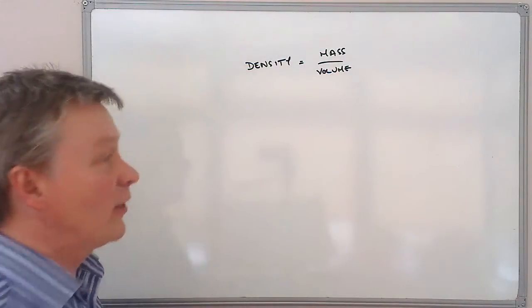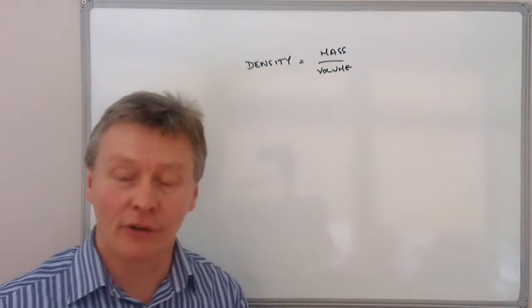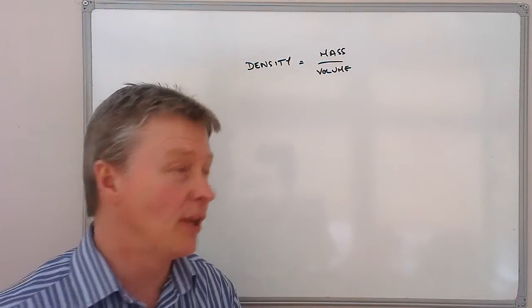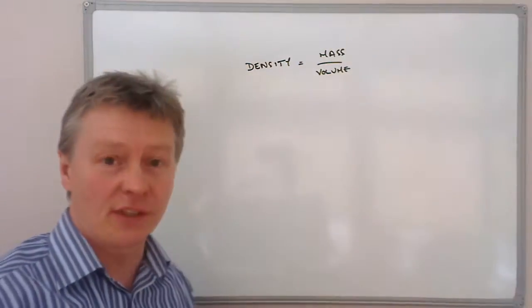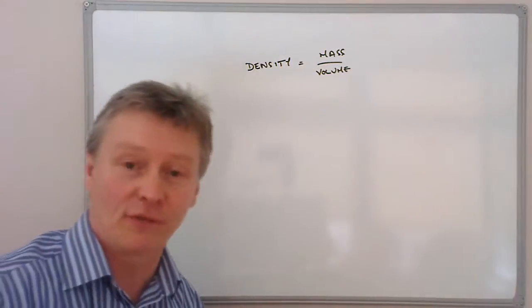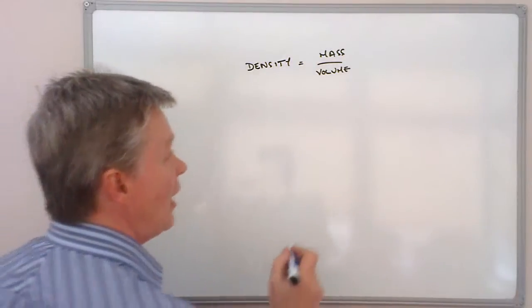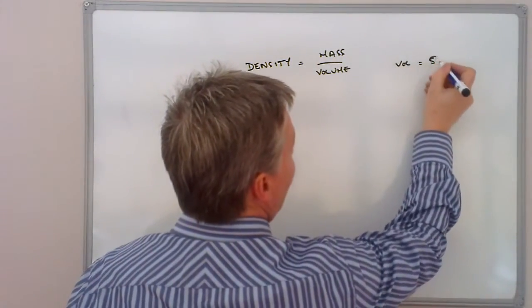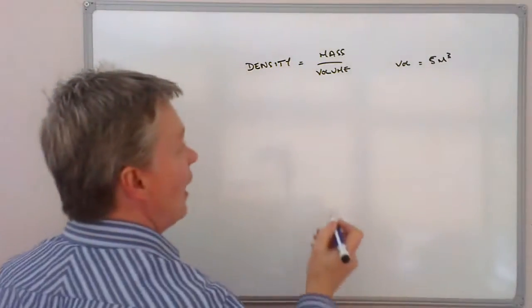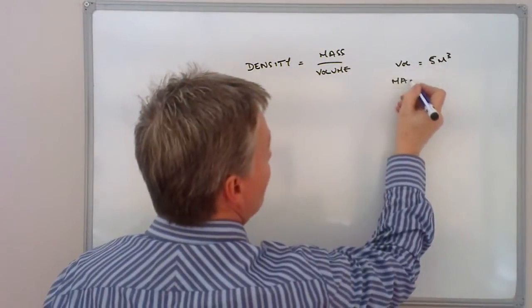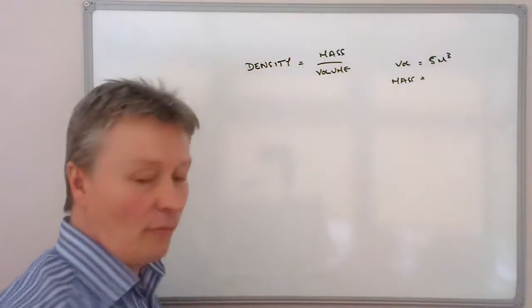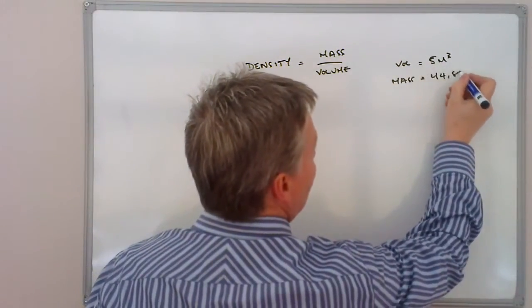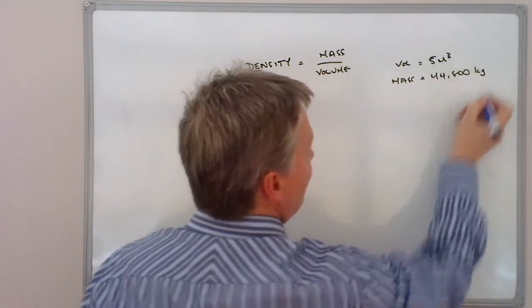I will write the question in the description area on the YouTube channel and also on the post on MathsRapp, but the information that we've been given is that this is a very large piece of copper which has a volume of 5 metres cubed and a mass of 44,800 kilograms.